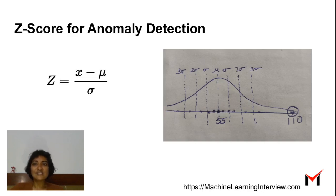Z-score measures how far away a particular point is from the mean. The idea is that if you look at this example here, most of the points are around this point 55, and if you look at 110 it is much farther away and it's an anomaly.